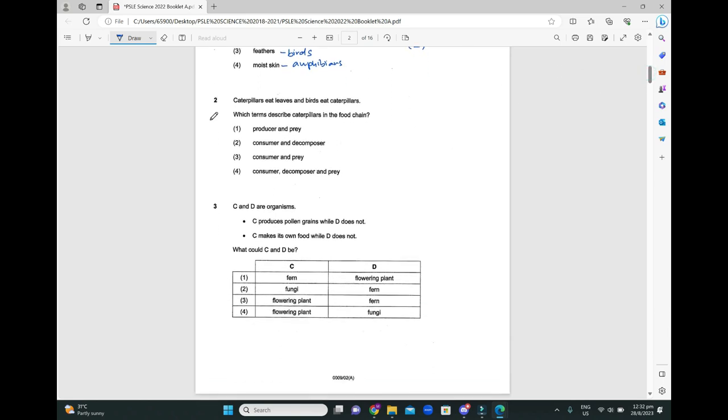Next question. Caterpillars eat leaves and birds eat caterpillars. So if I were to draw out the food chain, it would be leaves to caterpillars to birds. What would you use to describe the caterpillars in the food chain? They eat leaves so they are a consumer, but they're eaten by birds and so they become the prey. They are not decomposers, and they are also not predators. If you eat a plant, they are not predators. Herbivores are not predators. So the answer for this is number three.